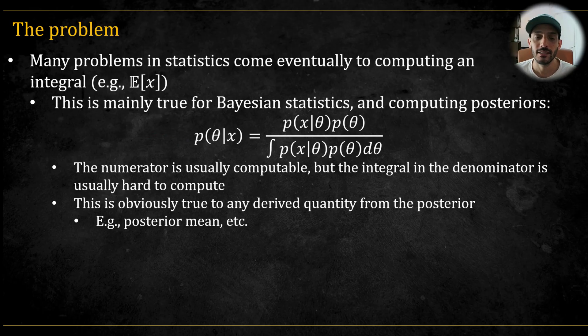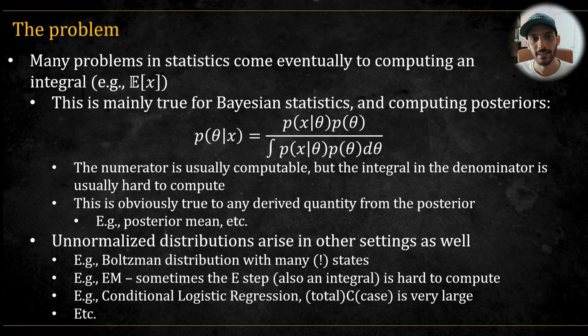Using Bayes' rule, we see that this is equal to the likelihood times the prior, divided by the evidence. But the evidence itself is a really hard-to-compute integral. And if we don't have the posterior, we obviously can't compute the mean of the posterior or any other derived quantities from it. While Bayesian statistics is a prime example of encountering integrals, the need also arises in other settings.